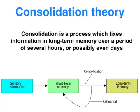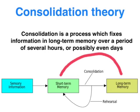A simple explanation of the consolidation theory of memory is it's an explanation of the process involved in the formation of a long-term memory over time. We're talking about moving something from short-term memory to a permanent memory trace in our LTM through rehearsal.